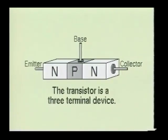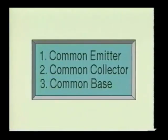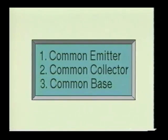Since the transistor is a three-terminal device, one of the terminals must be connected so it is common to both the input and the output of the device. Therefore, the bipolar junction transistor may be connected in a circuit in one of three ways: a common emitter configuration, a common collector configuration, or a common base configuration. Each of these configurations will have its own circuit characteristics.